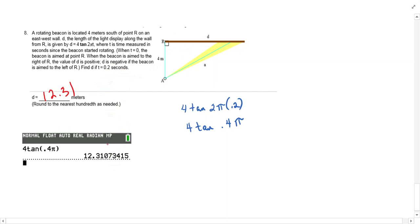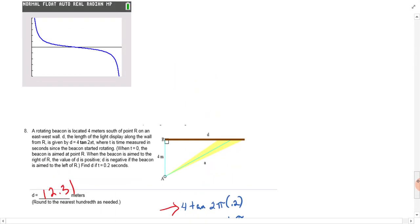Honestly, this is a really easy question. You're just plugging in. In your calculator, you can write 4 tan 2 pi times 0.2, and so that becomes 0.4 pi. When I went to the calculator, you get 12 point and then a lot of numbers. It says round to the hundredths, so it's 12.31. That's really an easy calculation, just plugging in if you pay attention.